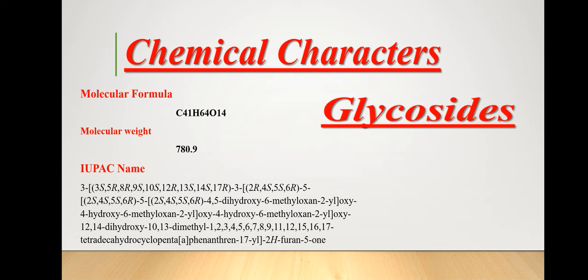A glycoside, in the simplest terms, can be described as a cyclic carbohydrate derivative with a very complex structure. It can be described as a compound formed from a simple sugar and another compound by replacement of a hydroxyl group in the sugar molecule. It is also described as a naturally occurring compound composed of a sugar linked with another functional group via a glycosidic bond.